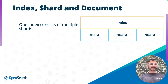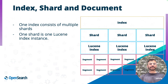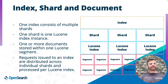Each shard is a Lucene index of its own. And each Lucene index is made up of what are called segments. Segments is where the actual indexed documents are stored, and segments are also the fundamental storage unit in Lucene. So when you run a search request against an index, the request fans out to all the shards of that index. Each shard — the Lucene index — executes the search operation, and the results from all these Lucene indices are then merged before returning the results back to you.